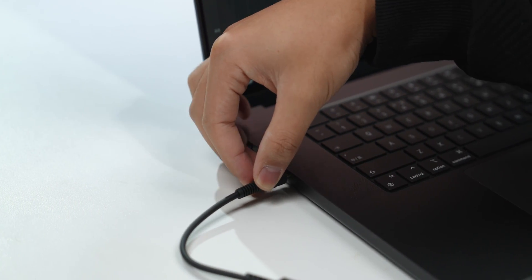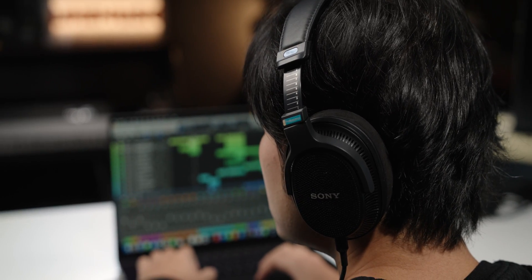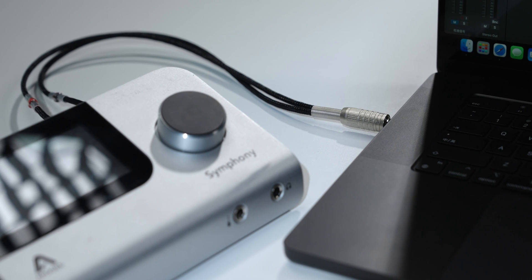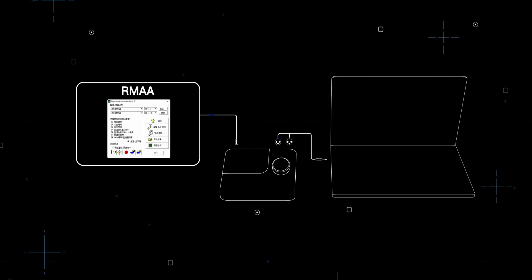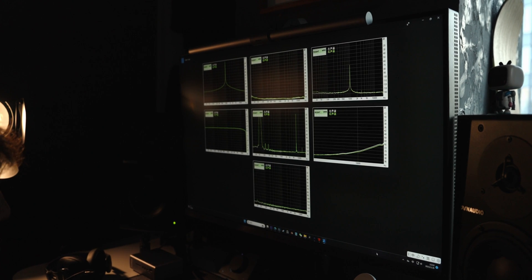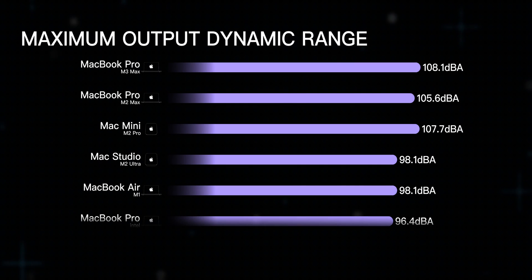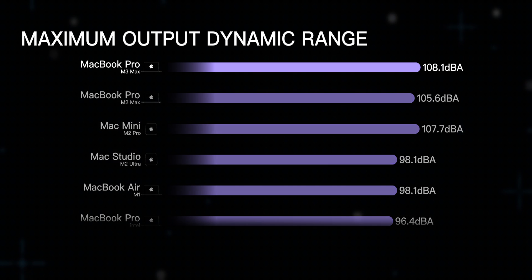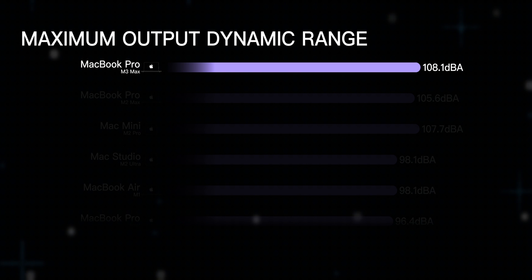First of all, many music lovers, enthusiasts, and practitioners say that the quality of Mac's sound card and playback is actually very good. So this time, we measured the specific data of Mac's onboard sound card. We connected the Mac to the Apogee Symphony desktop sound card via a 3.5mm cable connection, and used RMAA software for testing. The DA output dynamic range test: the higher the number, the better the quality. The new MacBook Pro with M3 Max core scores 108.1 dBA.